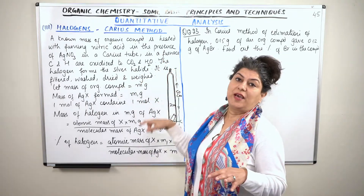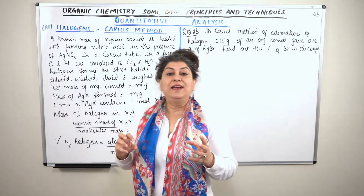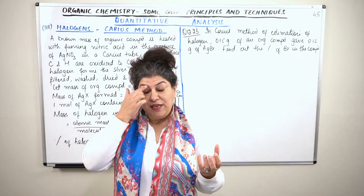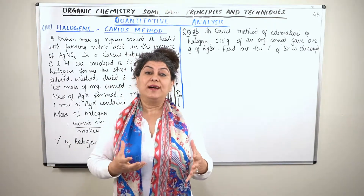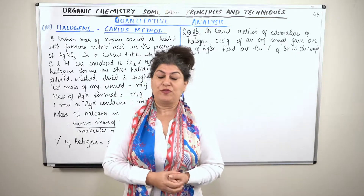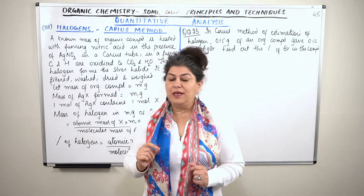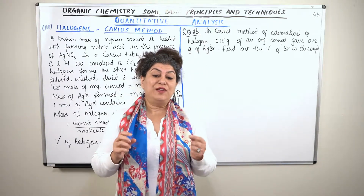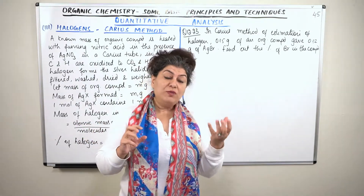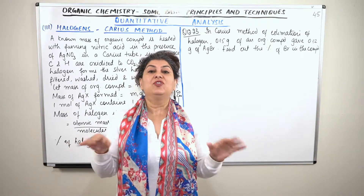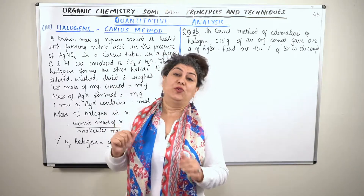It is done in a special apparatus known as the Carius tube. You know we prepared the silver halide — if the silver halide formed is a white precipitate, it indicates the presence of chlorine. If it is pale yellow, it indicates bromine; and if it is sparingly soluble in ammonium hydroxide, it is bromine. If the yellow precipitate is absolutely insoluble in ammonium hydroxide, then it is iodine.